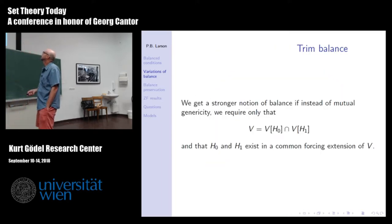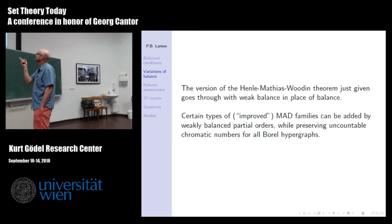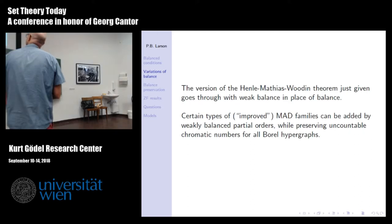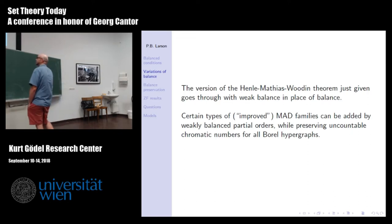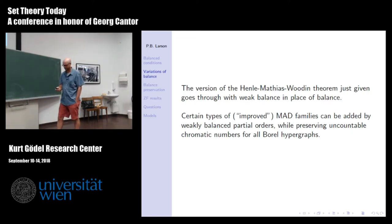One other interesting thing: in the MAD family model we showed you preserved all hypergraphs. Part of this project was trying to express as many forms of the axiom of choice as possible as chromatic numbers for Borel hypergraphs — a selector is just connecting everybody in the same class, and if you give countably many colors you can pick one. But as it turns out, some forms of the axiom of choice are chromatic numbers for hypergraphs and some aren't, like MAD families.